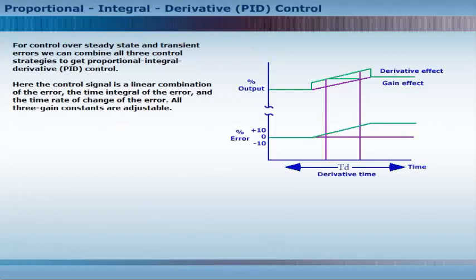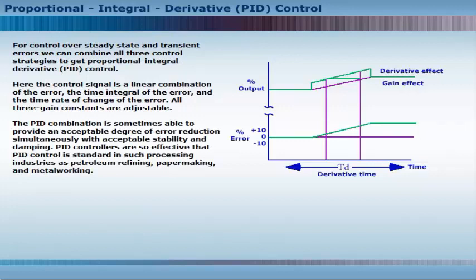For control over steady state and transient errors, we can combine all three control strategies to get proportional integral derivative control. Here the control signal is a linear combination of the error, the time integral of the error, and the time rate of change of the error. All three gain constants are adjustable. The PID combination is sometimes able to provide an acceptable degree of error reduction simultaneously with acceptable stability and damping.